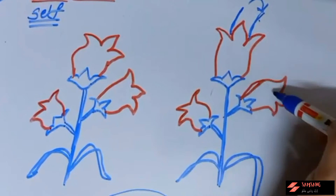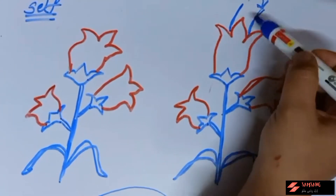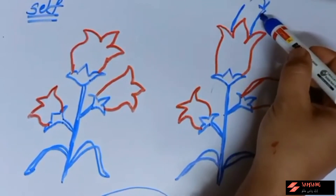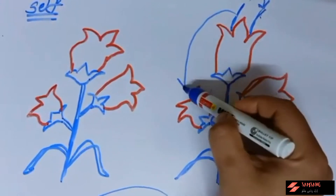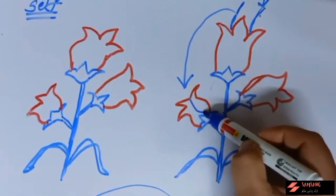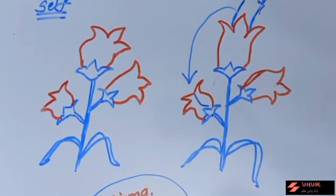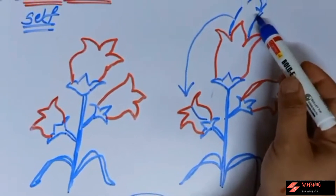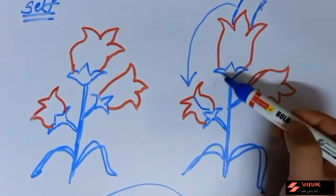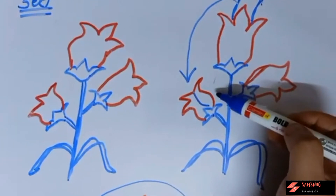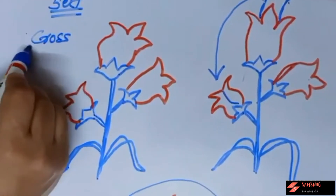Self-pollination may take place inside the same flower, or from one flower to another flower on the same mother plant. So self-pollination means the transfer of pollen grain from anther of stamen to the stigma of carpel in the same flower of the same mother plant, or between two different flowers of the same mother plant.